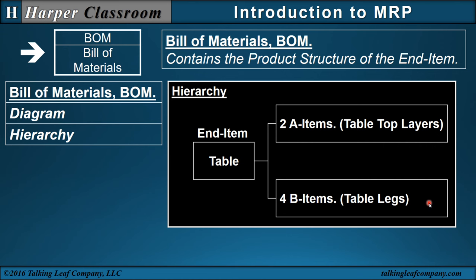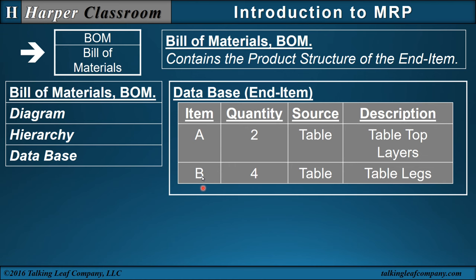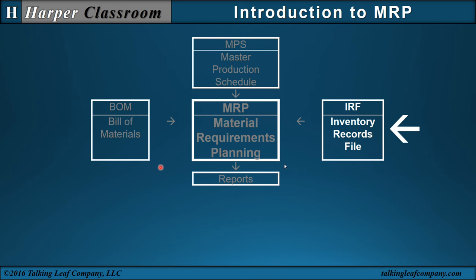For B items — table legs — that also go into the end item, the table. This is the form we will use, and notice this is a one-layer hierarchy, but you can have many different layers. The demand of the A and B items is dependent on the demand of the table, so MRP is referred to as a dependent demand inventory system. For very large end items, your bill of materials could be a large database. The information you need is the items, the quantity of items that go into the source item, and the description of the items.